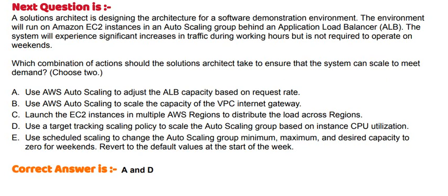Option B: Use AWS Auto Scaling to scale the capacity of the VPC internet gateway. Option C: Launch the EC2 instances in multiple AWS regions to distribute the load across regions. Option D: Use a target tracking scaling policy to scale the Auto Scaling group based on instance CPU utilization. Option E: Use scheduled scaling to change the Auto Scaling group minimum, maximum, and desired capacity to 0 for weekends, and revert to the default values at the start of the week.